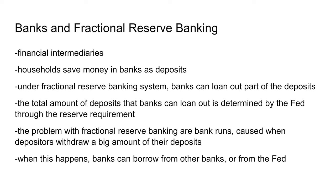Now we talk about banks and the fractional reserve banking system. Banks are financial intermediaries — households save money in banks as deposits, and under fractional reserve banking banks can loan out part of those deposits. The total amount a bank can loan out is determined by the Fed through the required reserve ratio. The problem is that the bank doesn't have all of your money on hand, so if you withdraw a large portion, banks may need to borrow from other banks or, as a last resort, from the Fed.